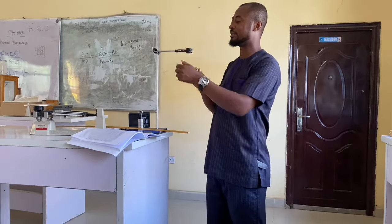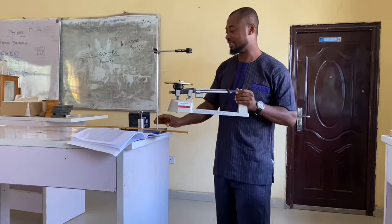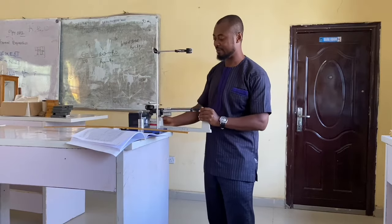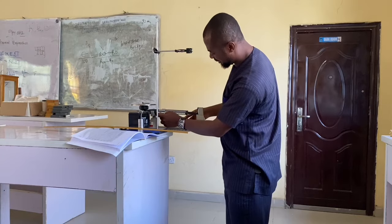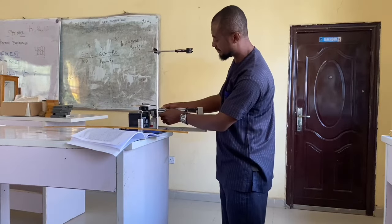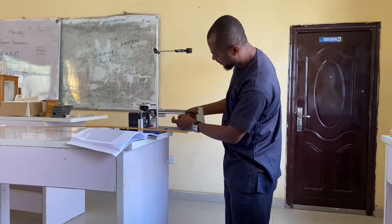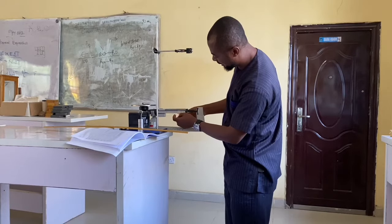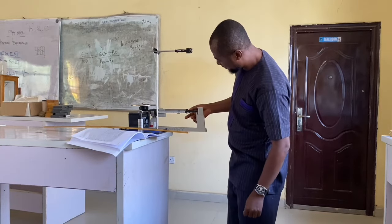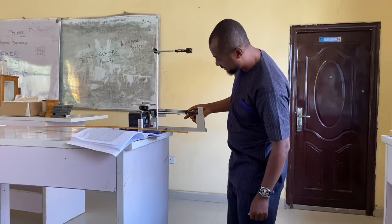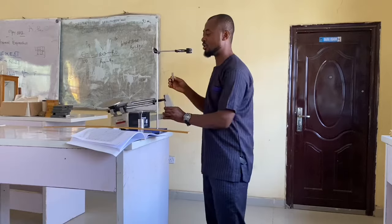I will weigh the mass of the spiral spring using the triple beam balance. Using this triple beam balance, I will record the mass as my E₀. This particular spring is weighing 8 grams.